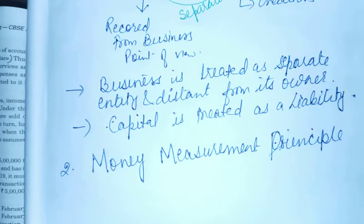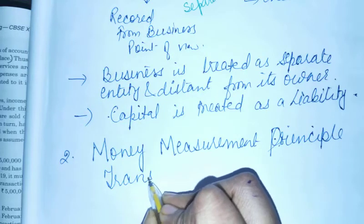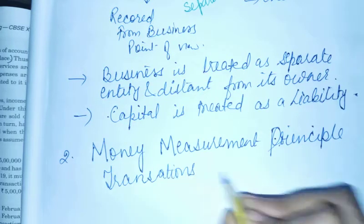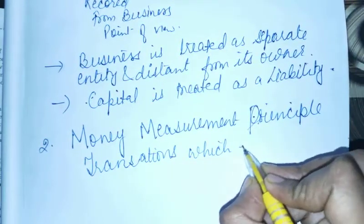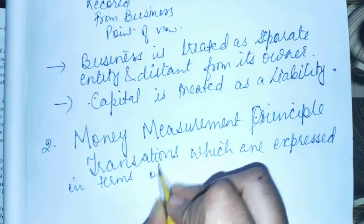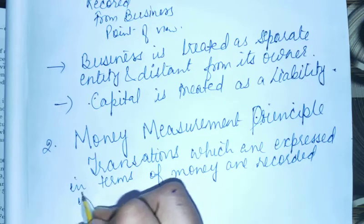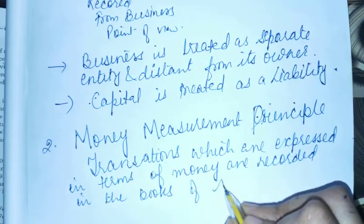जैसे हमारे organization में अच्छे employees हैं, that is important for us, but we do not record them in our books of accounts. But अगर हम कोई goods sale करते हैं जिसकी value 5000 है — मैं money की terms में express कर रही हूँ — तो उसको हम books of accounts में record कर लेते हैं.